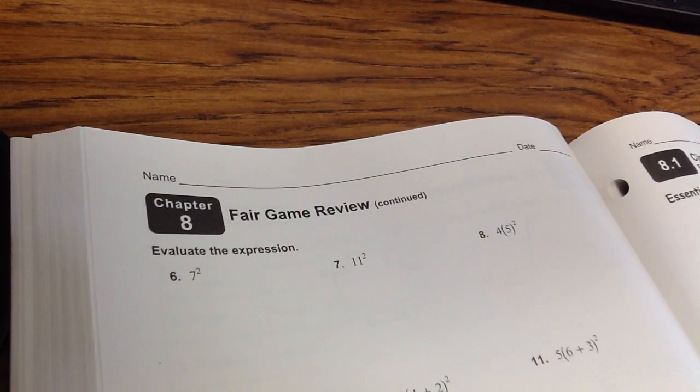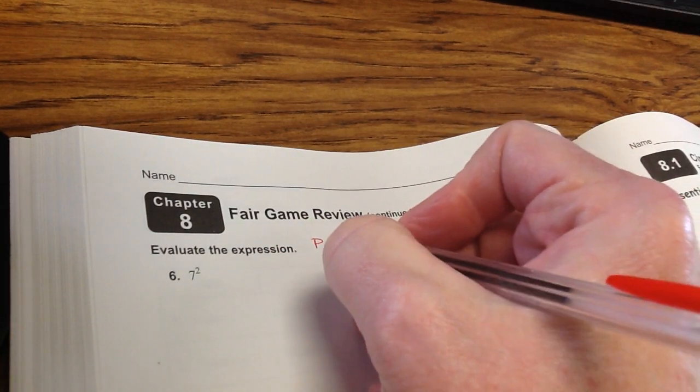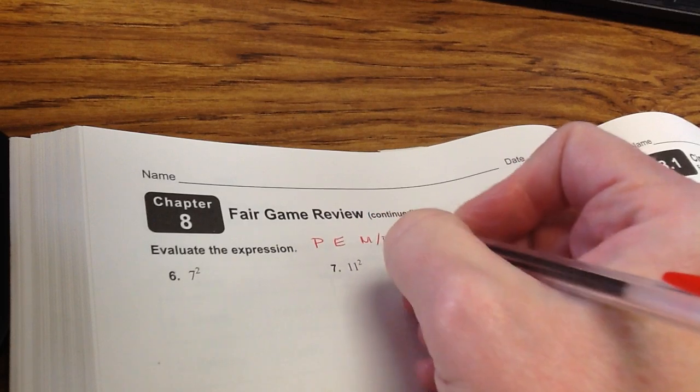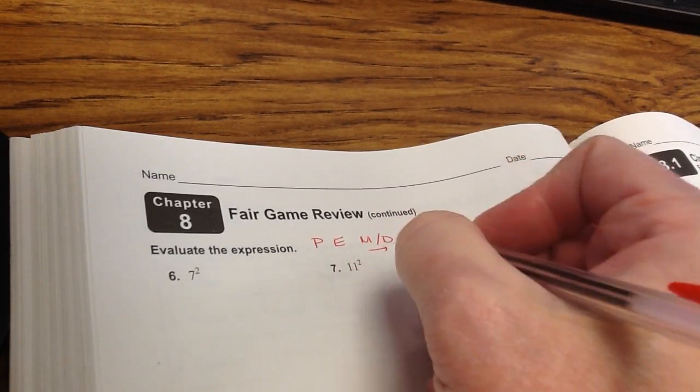So evaluate the expression. You're going to remember you're going to do parentheses first, then exponents, then multiplication or division whichever comes first from left to right, addition subtraction whichever comes first from left to right.